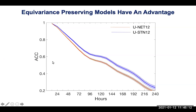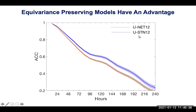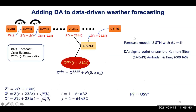Looking at anomaly correlation averaged over 12 initial conditions: USTN is shown in blue. If you cut a line at 0.6 — the limit of predictability — you see about one and a half days of extra prediction with USTN compared to the U-Net. So there is some marginal advantage to doing spatial transformers and preserving equivariance.